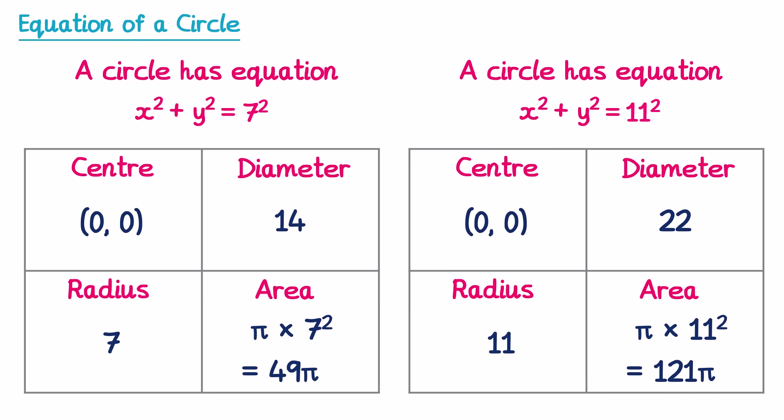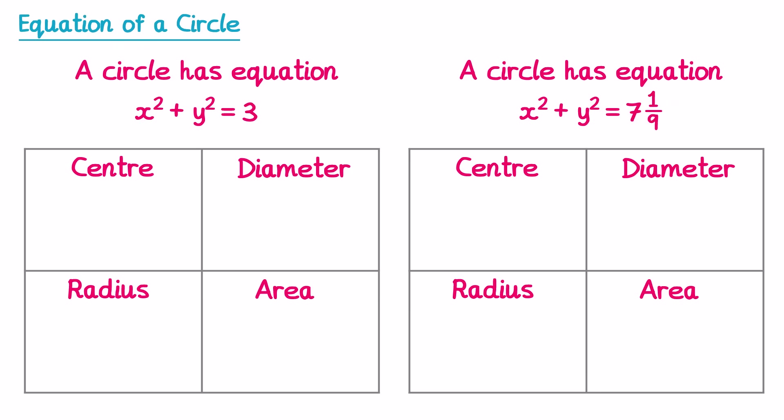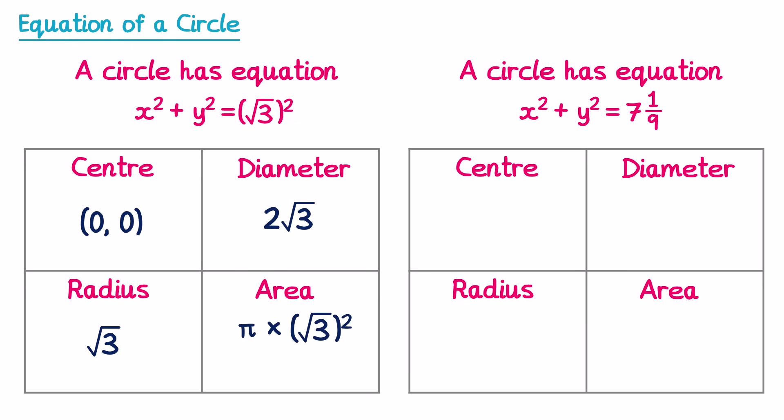Now let's do two trickier examples. For x² + y² = 3, we want to write it in the form x² + y² = r². Since 3 is not a perfect square, the square root gives us √3, so we rewrite it as x² + y² = (√3)². The centre is (0, 0), the radius is √3, the diameter is 2√3, and the area is π × (√3)² = 3π.